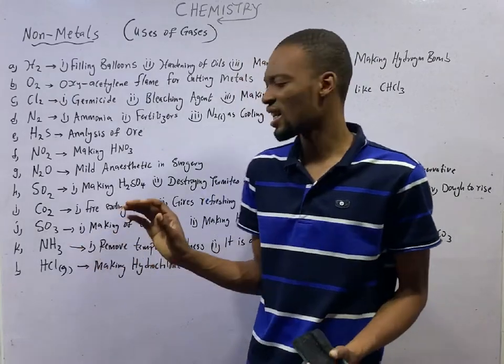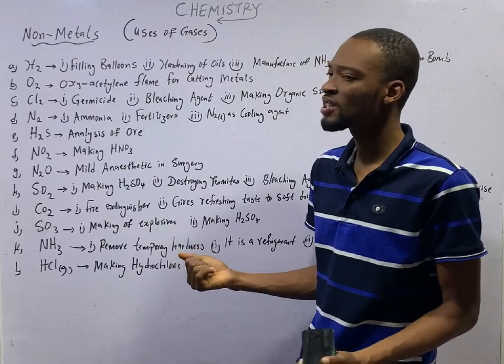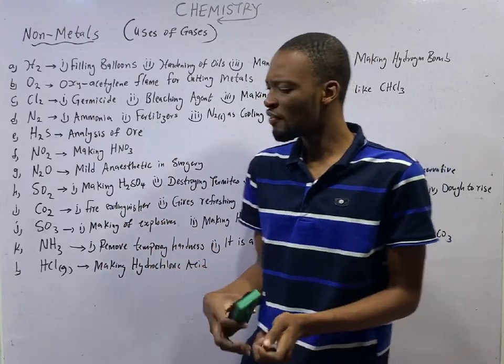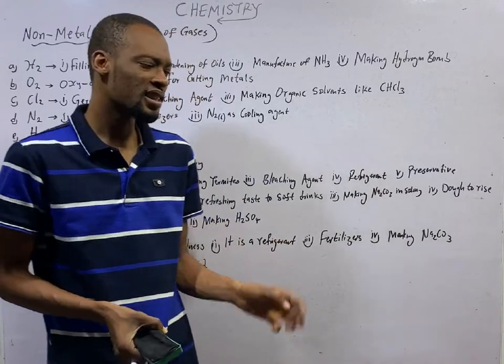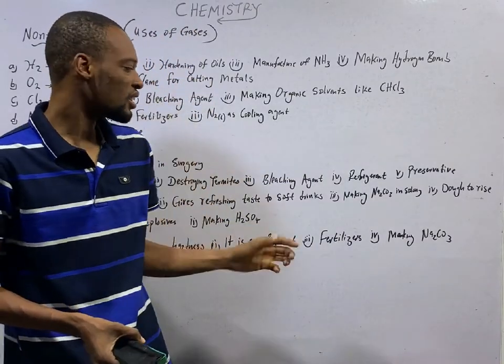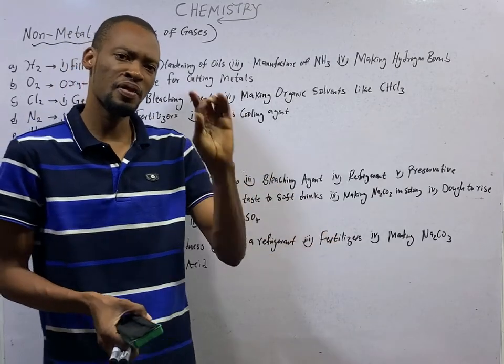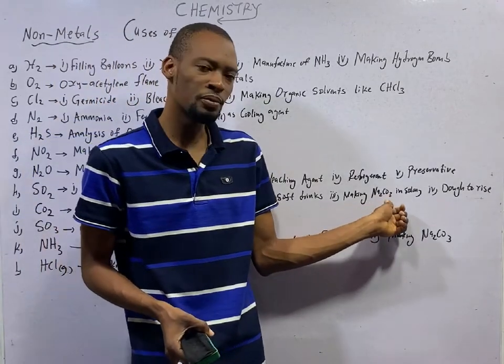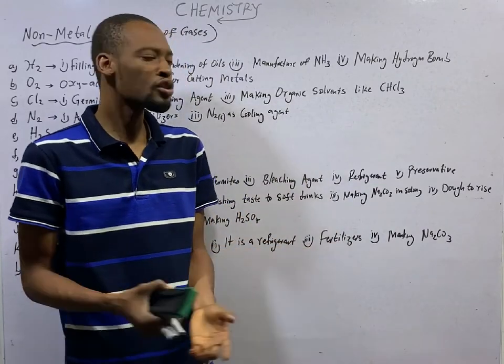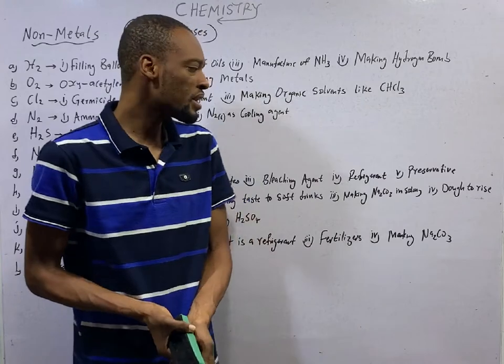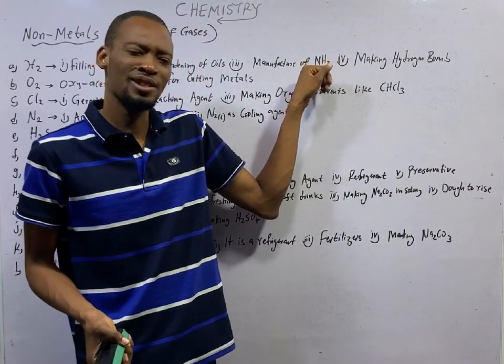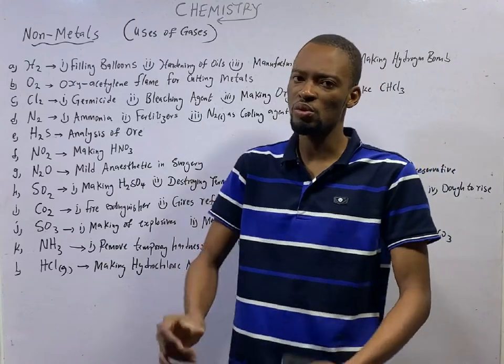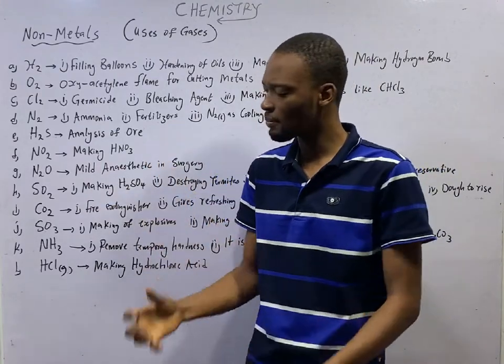Sulfur dioxide can be used as refrigerant. The carbon dioxide is used as fire extinguisher. Why? Because it is light and it does not support burning. So you can use carbon dioxide to stop burning. When you have soft drinks, coke, fanta, sprite, when you open it, that refreshing taste you see, it is as a result of carbon dioxide. It is carbon dioxide that gives soft drinks their refreshing taste. And it is used in making sodium carbonate, Na2CO3, in Solvay process. Solvay process is the industrial process used in making sodium carbonate, while Haber process is the industrial process used in making ammonia. Then finally, carbon dioxide makes the dough to rise while you are baking bread. It is carbon dioxide that makes that dough to rise.